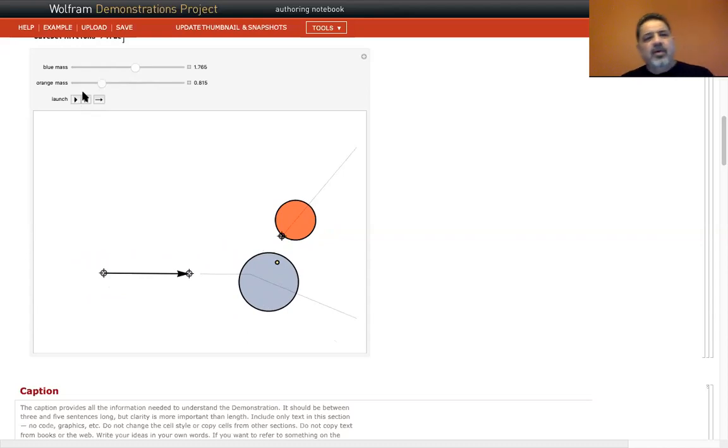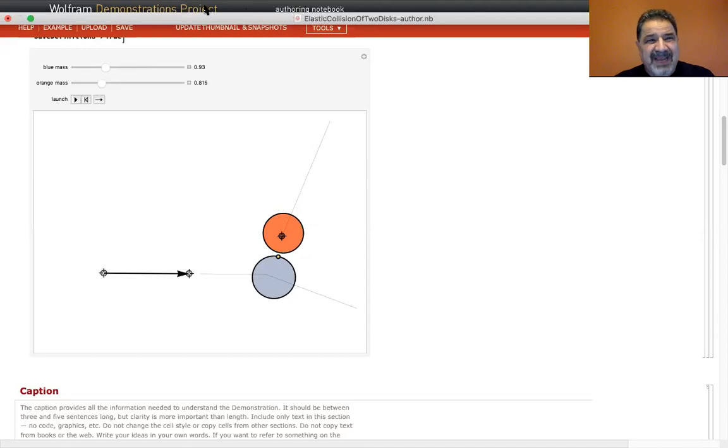Let's reset that again and decrease the blue mass. The angle is such that the orange one goes off at almost vertically, not quite vertically, but at about 75 to 80 degrees. So the glancing blows, you can calculate the angles that they go off, but it depends on the masses that you're working with.